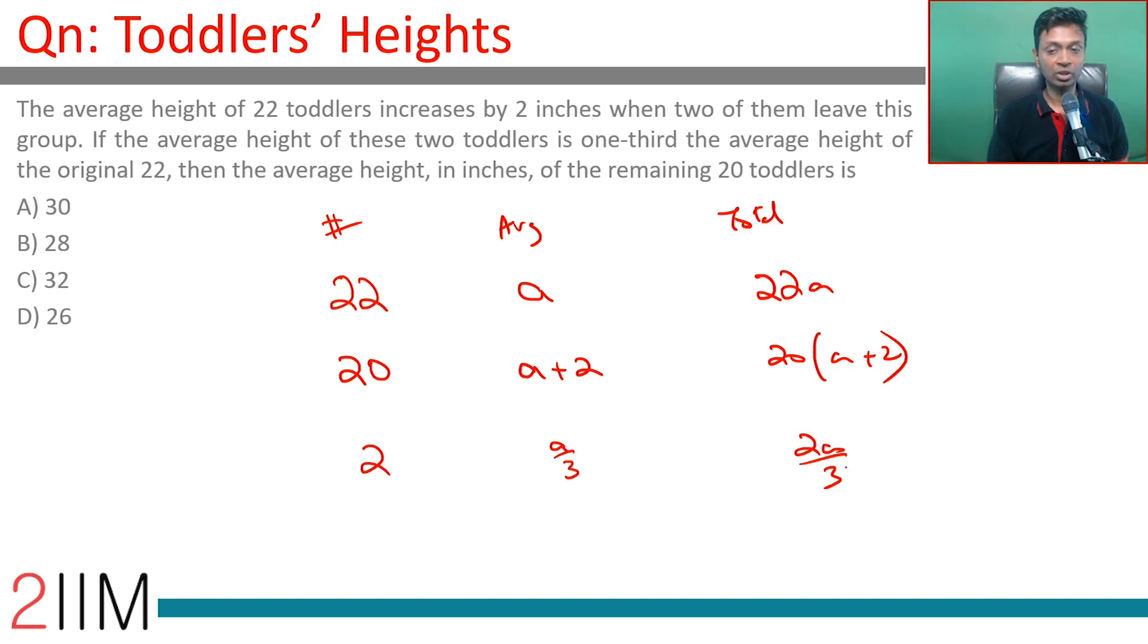2a by 3 - this is the total height of the 20 students, this is the total height of the two. This is total of 20, this is total of 2, this is total of 22.